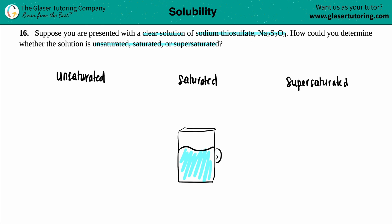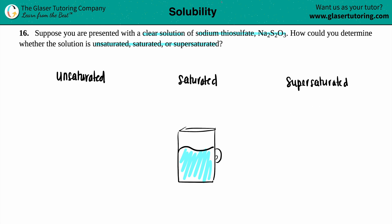That is classified as a supersaturated solution. A supersaturated solution is when you start seeing something called a precipitate. A precipitate is just a fancy word for a solid — if you're adding so much of your solid that most of it isn't dissolving and some is left over, that's your precipitate.